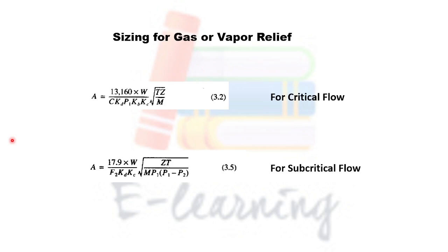If the incoming or relieving fluid is gas, we would use two equations. For critical flow, equation 3.2 of API 520 Part 1 would be used. For sub-critical flow, equation 3.5 of API 520 would be used.